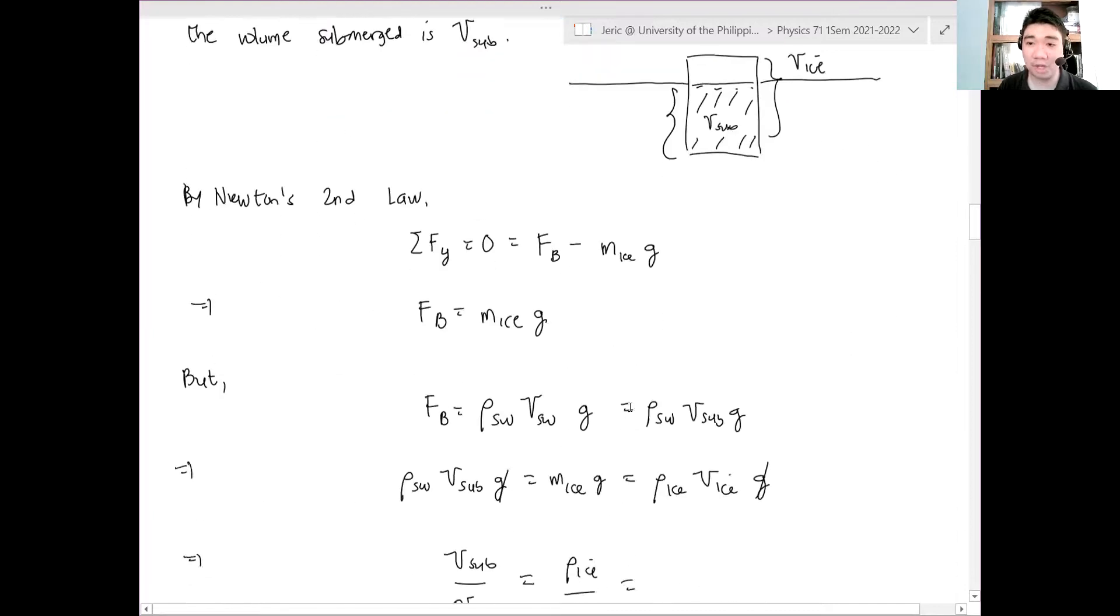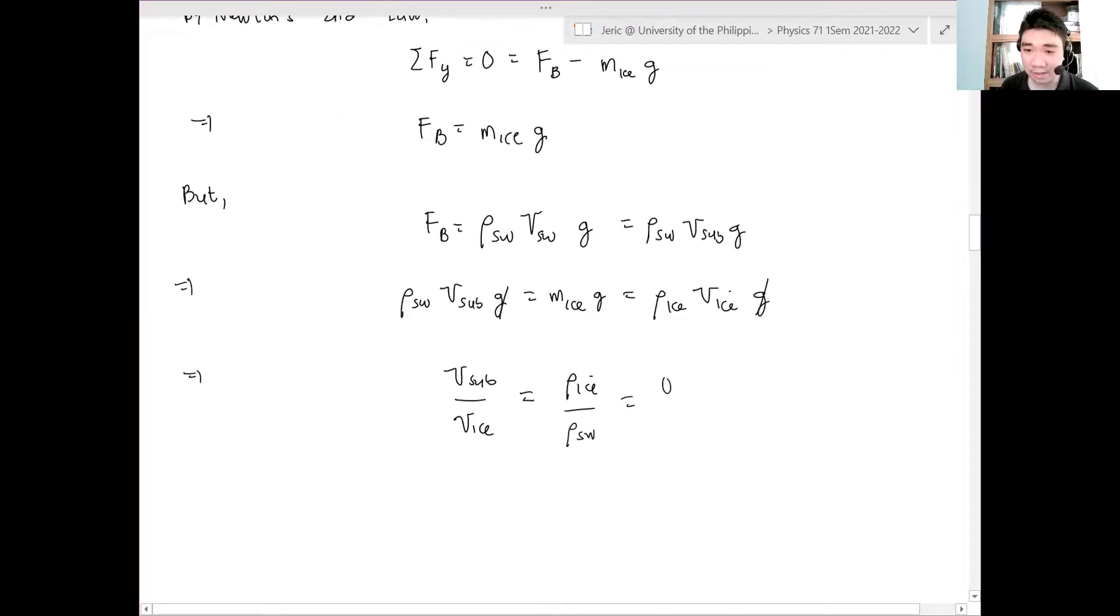But what's the density of iceberg? This is 0.92 times 10 to the 3 kilograms per cubic meter divided by 1.025 times 10 to the 3 kilograms per cubic meter. Of course, this will cancel. And therefore, the ratio of the submerged part over ice is just equal to 0.897.